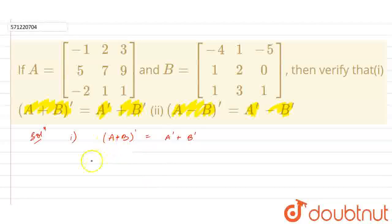So first of all, we are taking the LHS. LHS here is A plus B whole transpose. So first of all, we will calculate A plus B. So for that, if we use these matrices, this element will get added to this element, this element will get added to this element and this will get added to this element. Similarly, for the other elements.